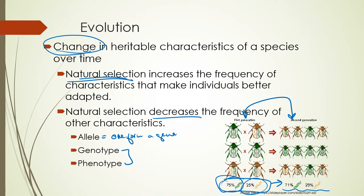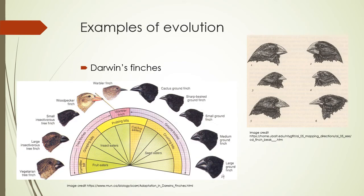Quick reminder: genotype is the combination of your alleles, like big A and little A. Phenotype is the actual physical trait you can see — whether you are green or green and yellow. Some more examples of evolution: Darwin's finches give us a great example. This particular idea is known as adaptive radiation, where one common ancestor — the finch — radiated out into many different species that take advantage of different environments and different food sources.